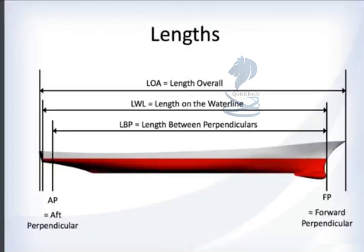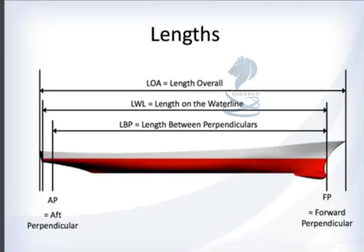There are several different lengths used when talking about ships. There's the length overall, which is important when determining how much dock length you need. But when looking at how the ship behaves in the water, you focus on the part of the hull underneath the water, so we talk about the length on the water line. There are also perpendiculars — vertical lines: the forward perpendicular at the bow, and the aft perpendicular near the stern or rudder/propeller shaft. The length between perpendiculars is simply the distance between those two defined perpendiculars.